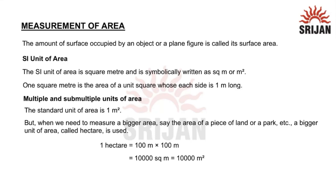In this video we will learn about the measurement of area. Every object covers a certain amount of surface, which is called its surface area, and the area depends on the size of the object. The SI unit of area is square meter, written as meter square. One meter square is the area of a square where each side is one meter long.